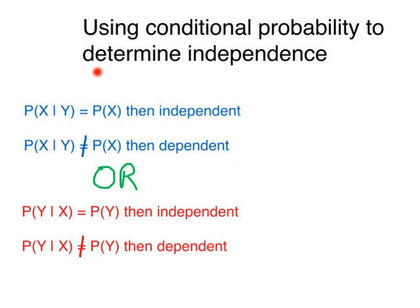You only have to choose one situation to determine independence. The order of which one you make the condition doesn't matter. So let's try an example.